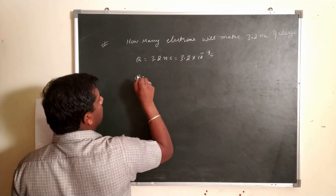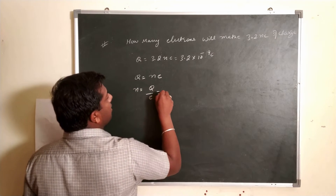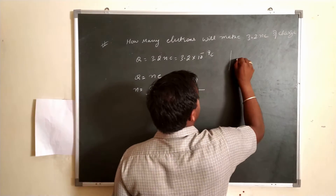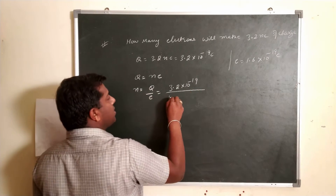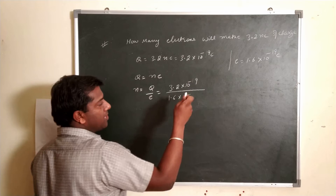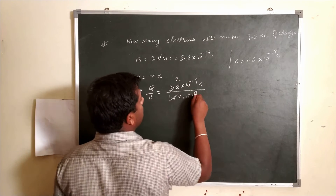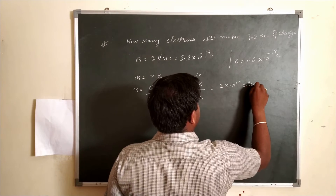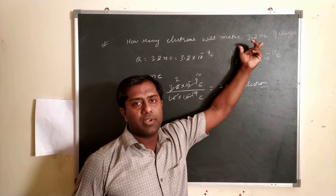According to the quantization principle, Q = n×e, so n = Q/e. Given Q = 3.2 × 10⁻⁹ C, and e = 1.6 × 10⁻¹⁹ C. So n = (3.2 × 10⁻⁹) / (1.6 × 10⁻¹⁹). This gives n = 2 × 10¹⁰ electrons. So 2 × 10¹⁰ electrons together make a charge of 3.2 nanocoulombs.